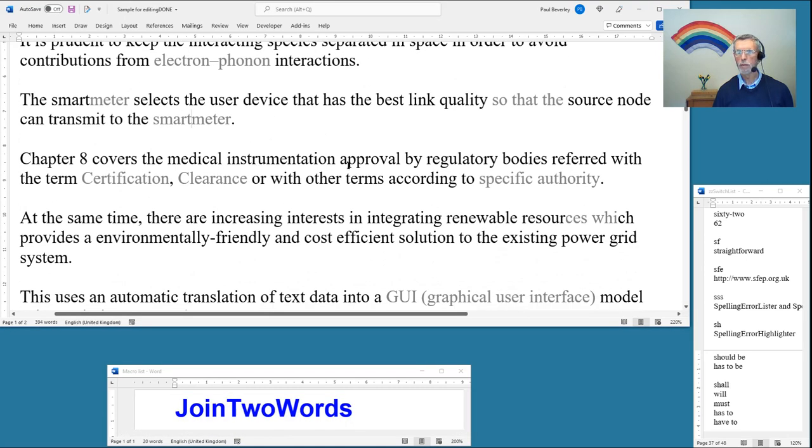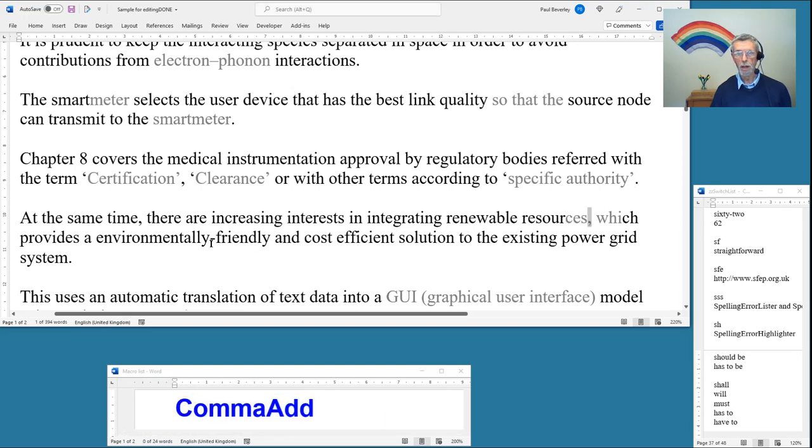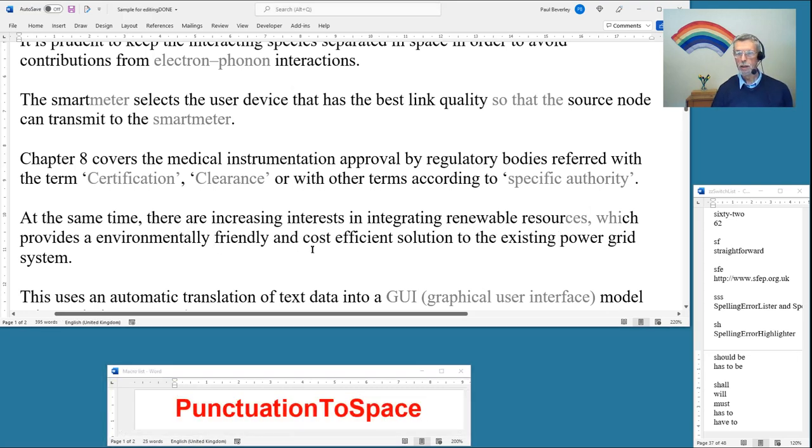Regulatory bodies referred with the terms certification, clearance or with other terms according to specific authority. Yeah, I think these could do with single quotes around those. At the same time, increasing interests in renewable resources, which provides an environmentally friendly and cost-efficient solution to the existing power grid system.